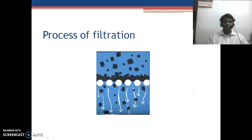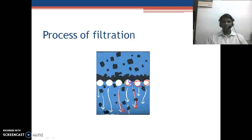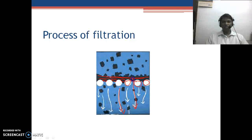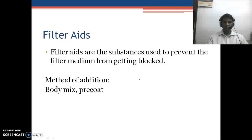In the filtration process, when we filter a solution, the slurry comes in and the filtrate passes down through the filter paper or septum, while solid particles remain on the surface. After some time, these solid particles clog the pores, gradually reducing and eventually stopping the rate of filtration. We use filter aids to prevent the filter media from getting clogged.